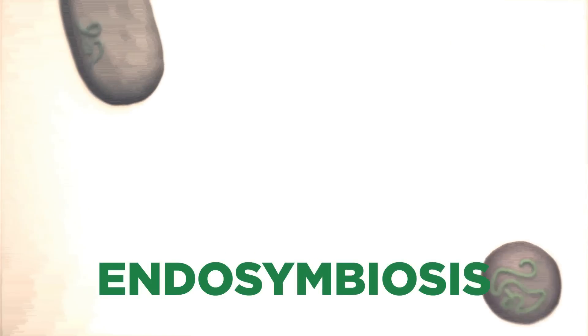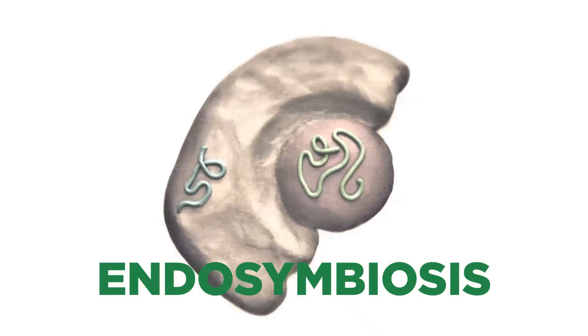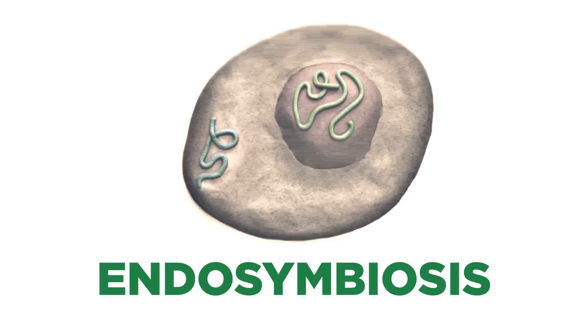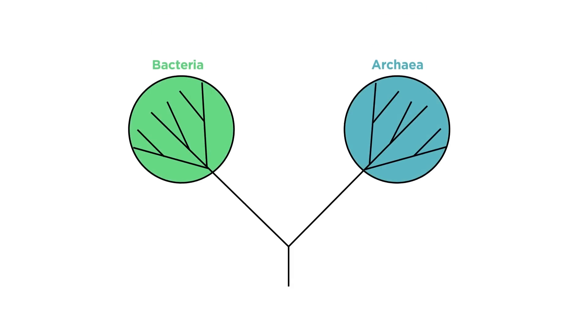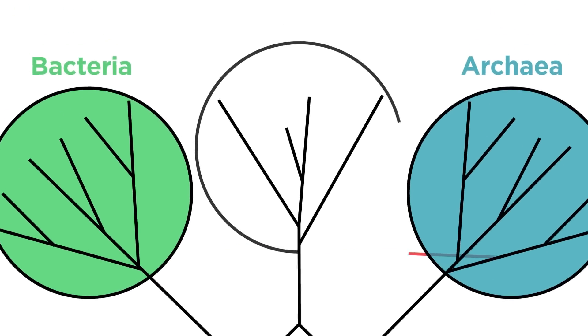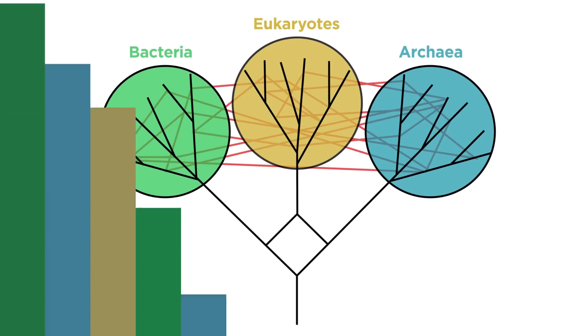When it comes to eukaryotes, we're not as clear on how DNA gets passed between species. One process called endosymbiosis seems to hold some of the answers. In endosymbiosis, a cell is completely enveloped by a larger cell, and they form a permanent symbiotic bond. We now believe that the first eukaryotic cells were formed through endosymbiosis when a bacteria and an archaea cell fused and began working together.